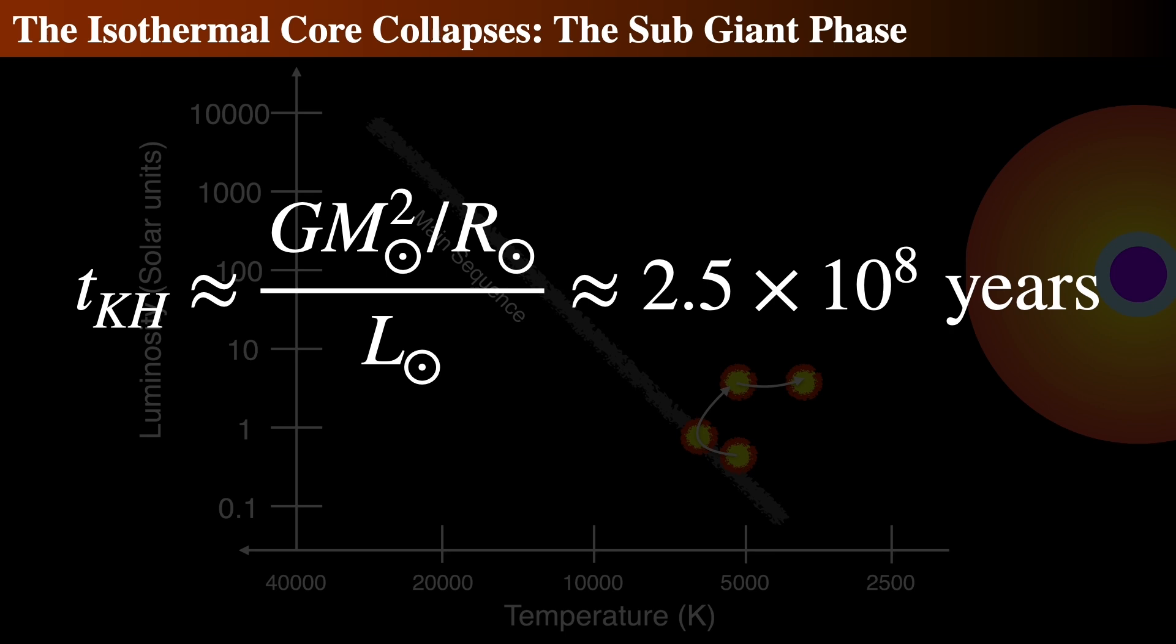The total gravitational energy of the sun's inert core divided by the luminosity needed to add to the shell burning to keep the sun from runaway freefall gives us a time. This time is how long the sun will be able to support itself in this way, which is only about 900 million years. This collapse of the core marks the very beginning of the subgiant phase of the sun's life.